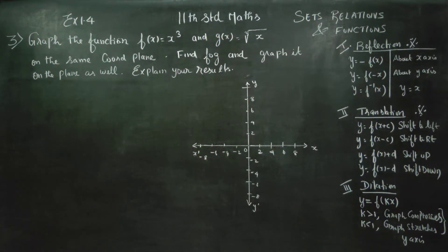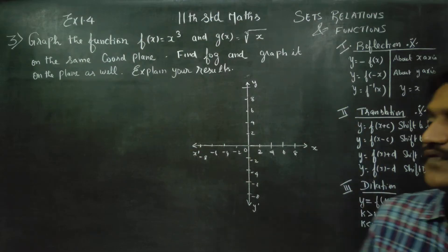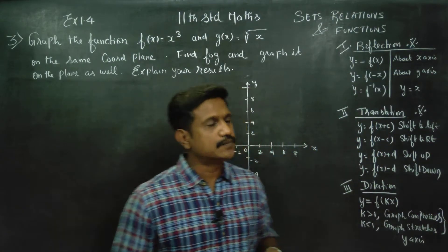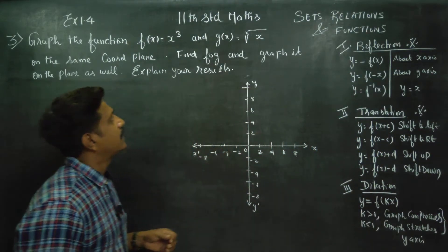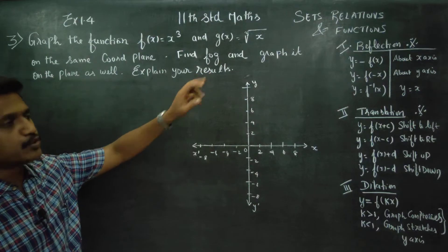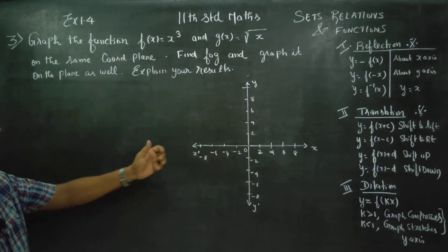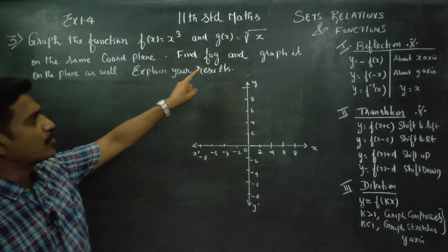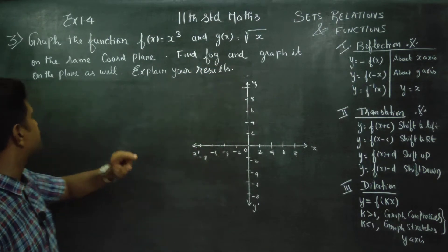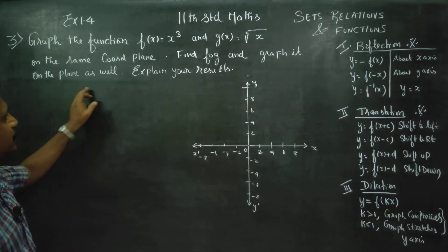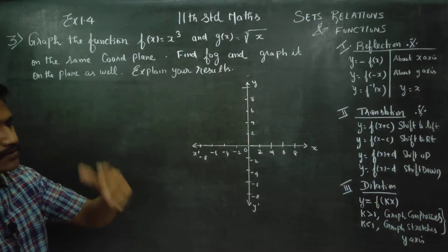Hello 11th standard students, I am Metro Karnagaran. In exercise number 1.4, sum number 3: graph the function f of x is equal to x cube, as well as g of x is equal to cube root of x on the same coordinate plane. Find f∘g and graph it on the plane as well. Explain your results.